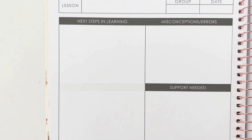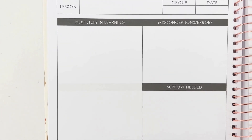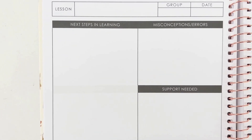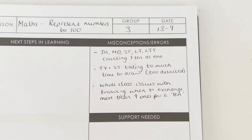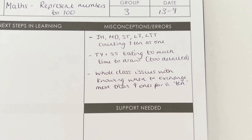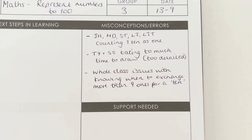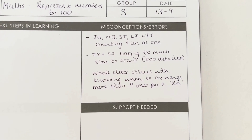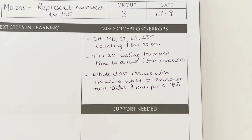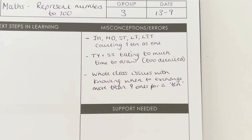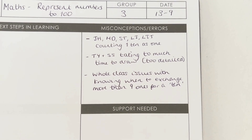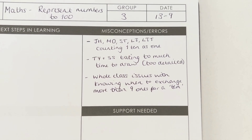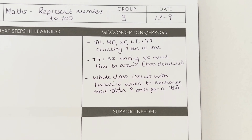The first section I would fill in at the end of a teaching sequence or lesson would be the misconceptions and errors section. I'll start with this section because I can identify the things that I need to work on going forward, and this will then impact what the next steps in learning will be and the support that will be needed in the future.